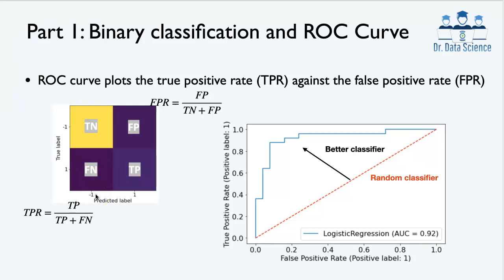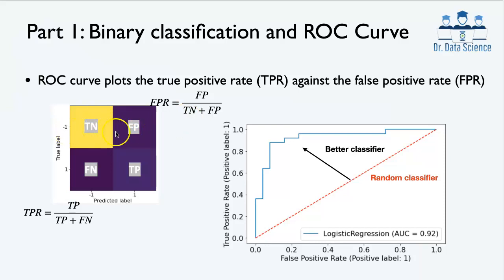Given these four cases, we can define two key quantities: true positive rate and false positive rate. True positive rate is the ratio of true positives to all elements in the positive row — that is, true positive divided by true positive plus false negative. False positive rate is false positive divided by true negative plus false positive. You want true positive rate to be as close to 1 as possible, and false positive rate to be close to 0.